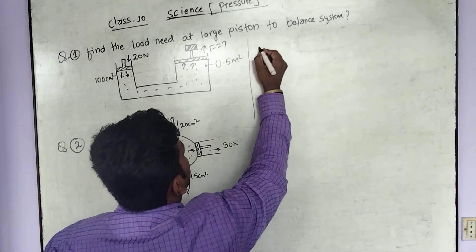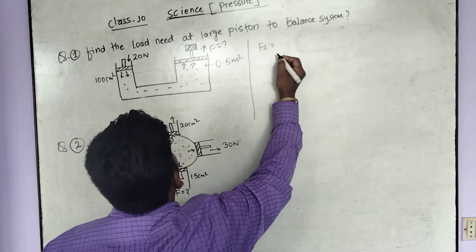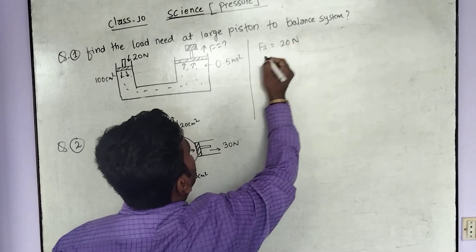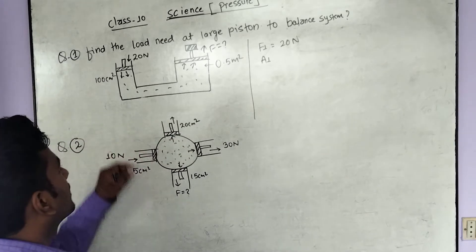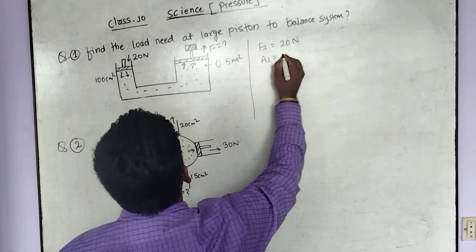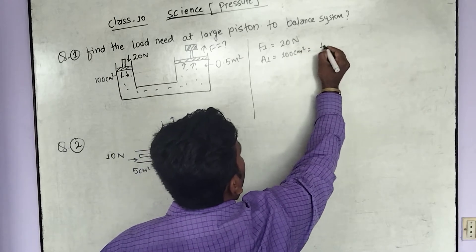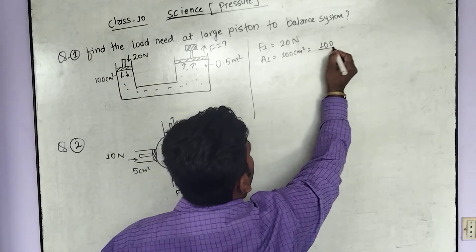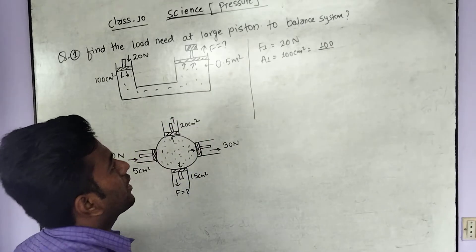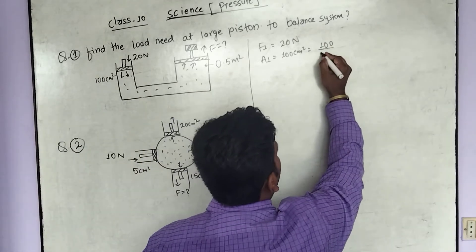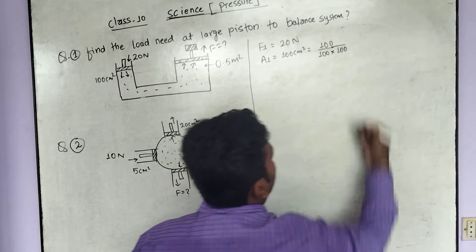For the small piston, let us suppose the applied force F1 is 20 N. The area of the small piston is A1 equals 100 centimeter square. In the last piston, the area of the piston is given in meter square, so we will convert. Centimeter square divided by 100 gives us the value in meter square.